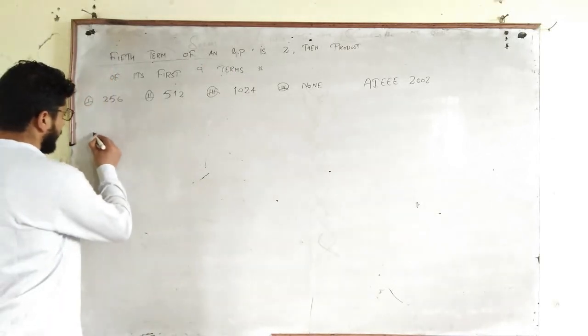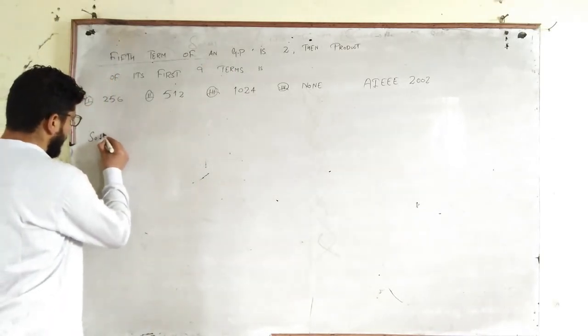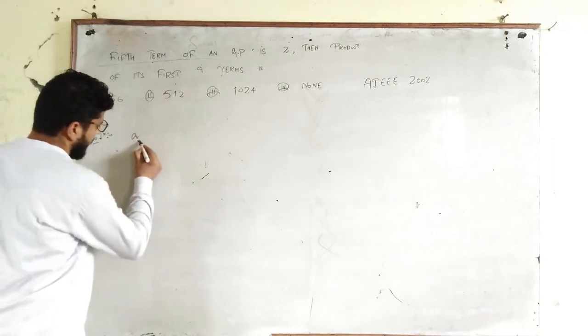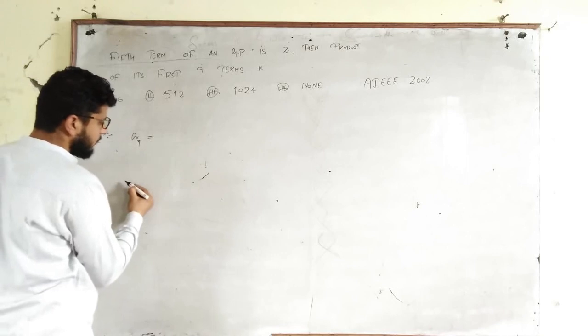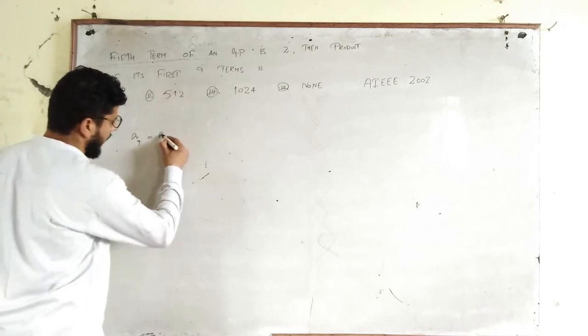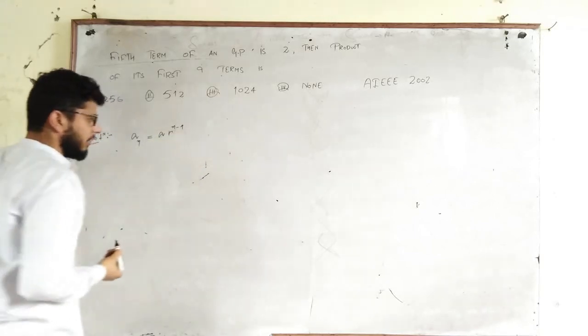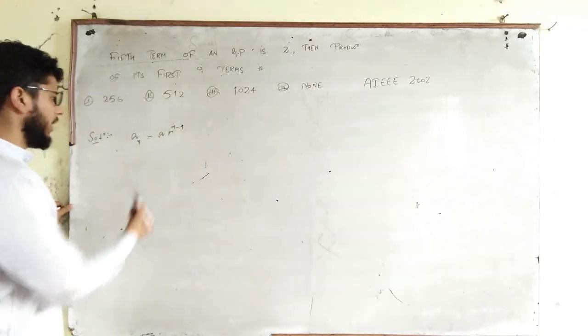Now, the solution. You must know the general term. In a GP, the general term is AN = AR^(N-1), where R is the common ratio and A is the first term.